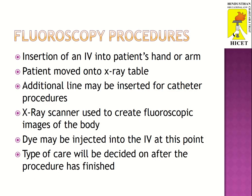Fluoroscopy procedures: the main procedure involves insertion of an IV into the patient's hand or arm, then the patient is moved onto an x-ray table. An additional line may be inserted for catheter procedures. An x-ray scanner is used to create fluoroscopic images of the body, and dye may be injected into the IV at this point. The type of care will be decided after the procedure has finished.